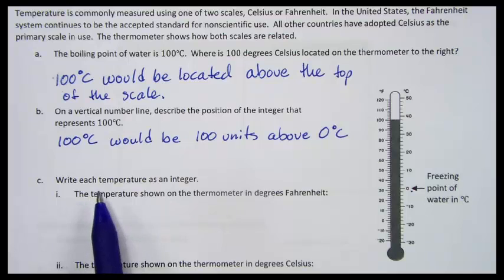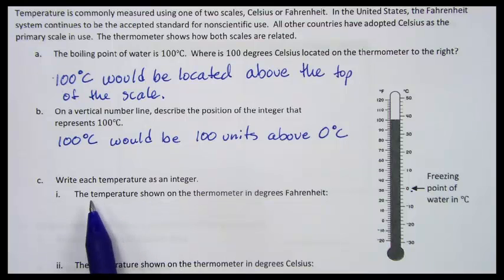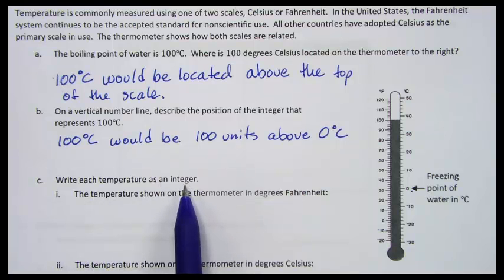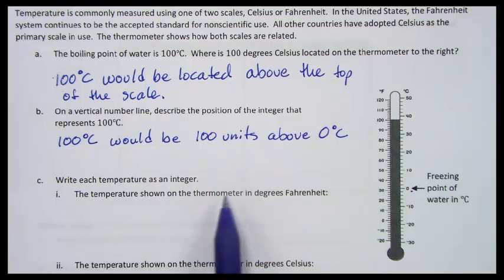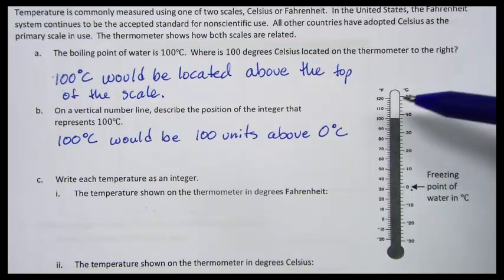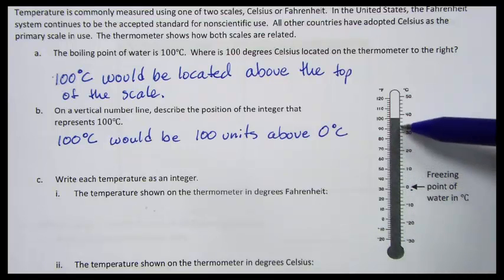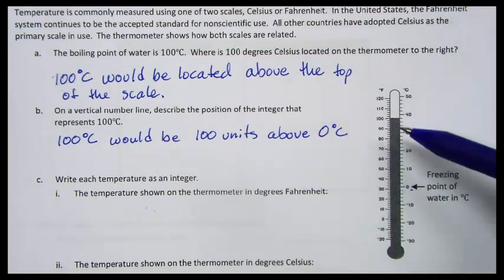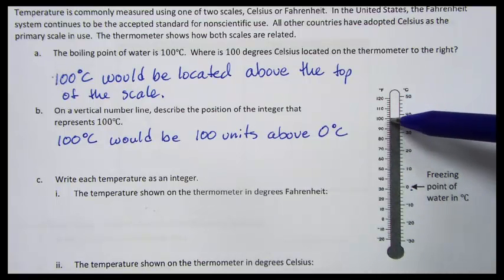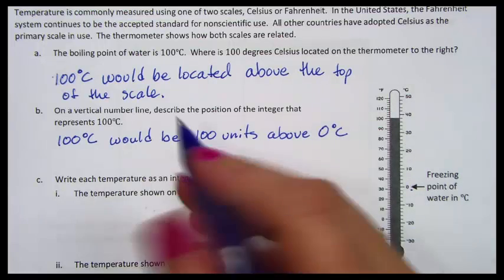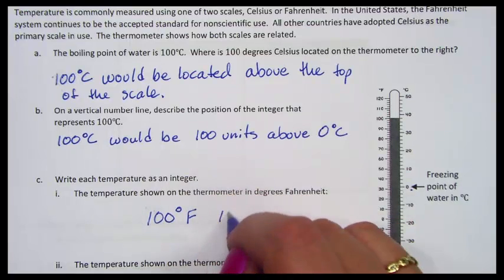Our next part asks us to write each temperature as an integer. Remember, an integer is a set of positive and negative whole numbers. Whole numbers and their opposites. Temperature shown on the thermometer in degrees Fahrenheit. What they want is to show the temperature on the thermometer in degrees Fahrenheit. The temperature on the thermometer is shown by this dark line here. It's sitting right at 100 degrees Fahrenheit. So the temperature shown on the thermometer in degrees Fahrenheit is 100 degrees Fahrenheit or as an integer, 100.